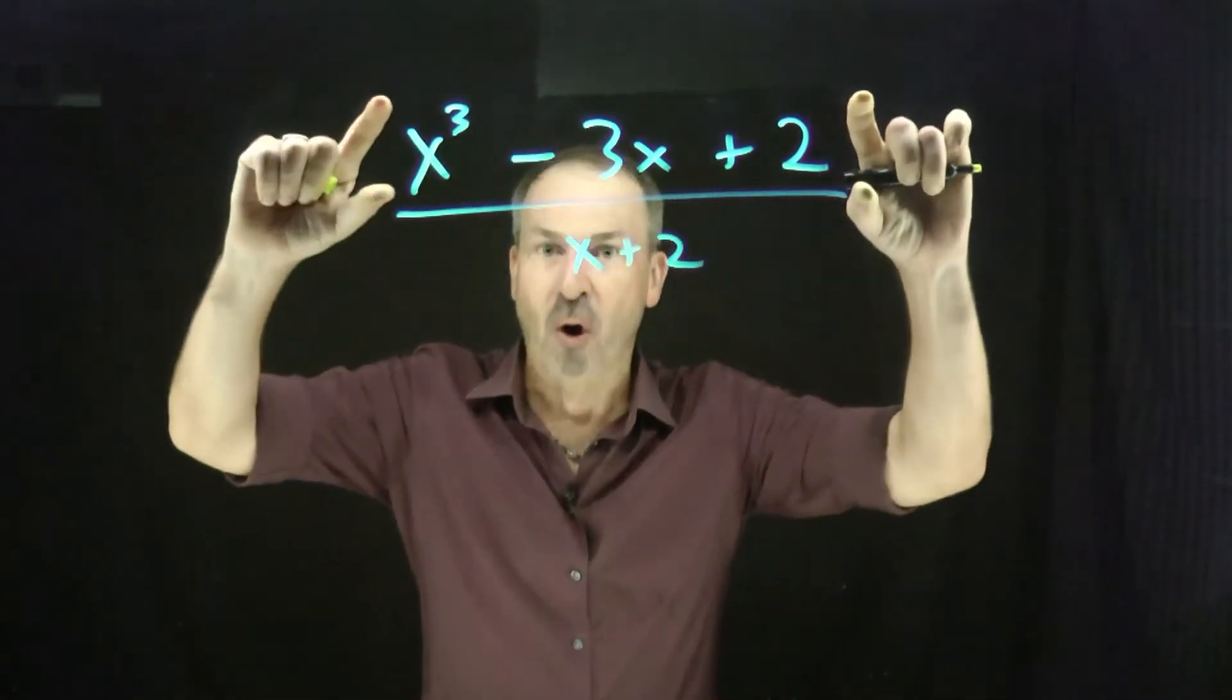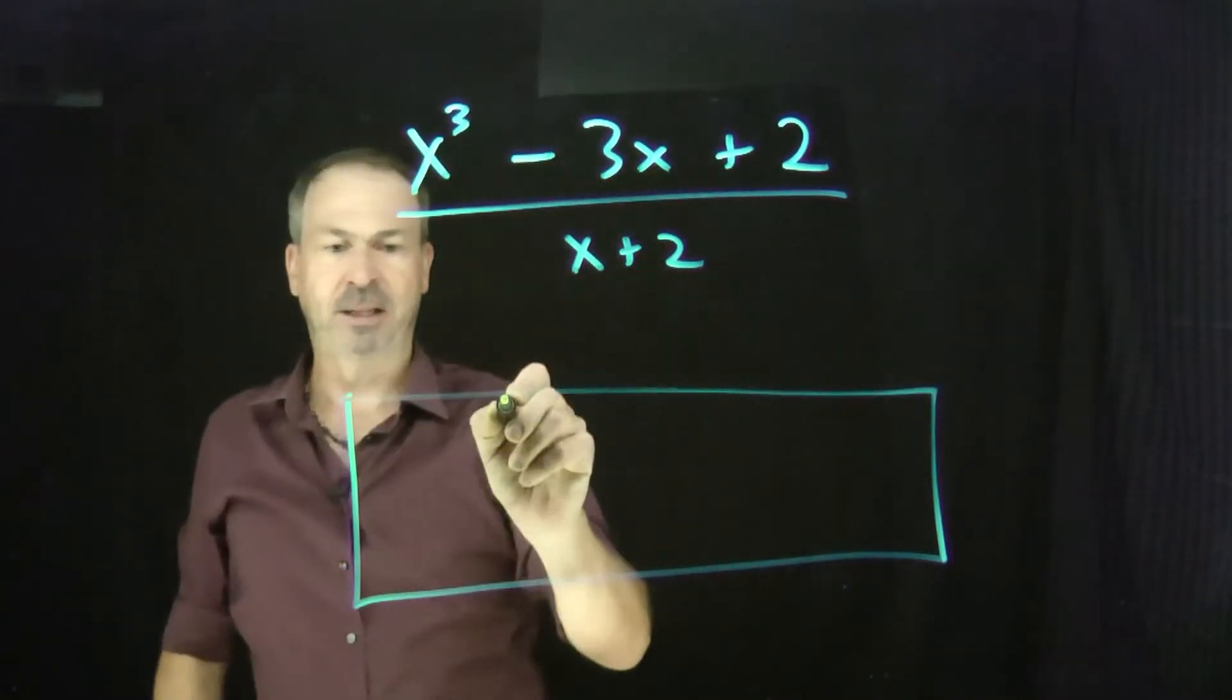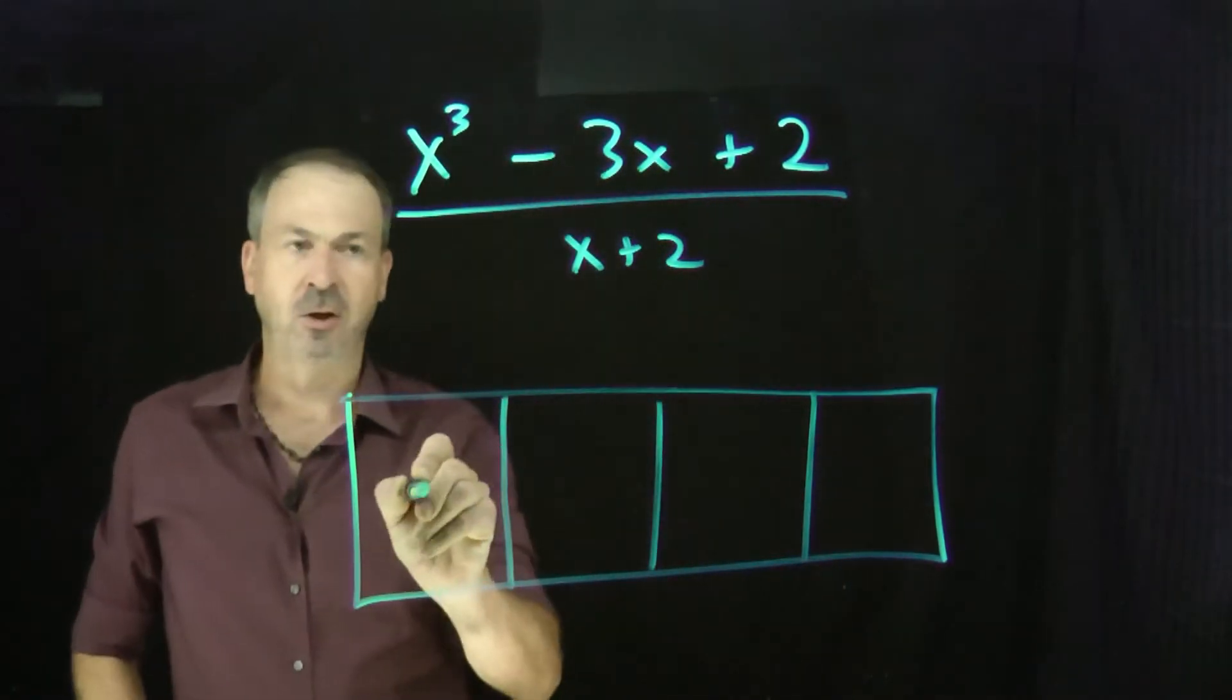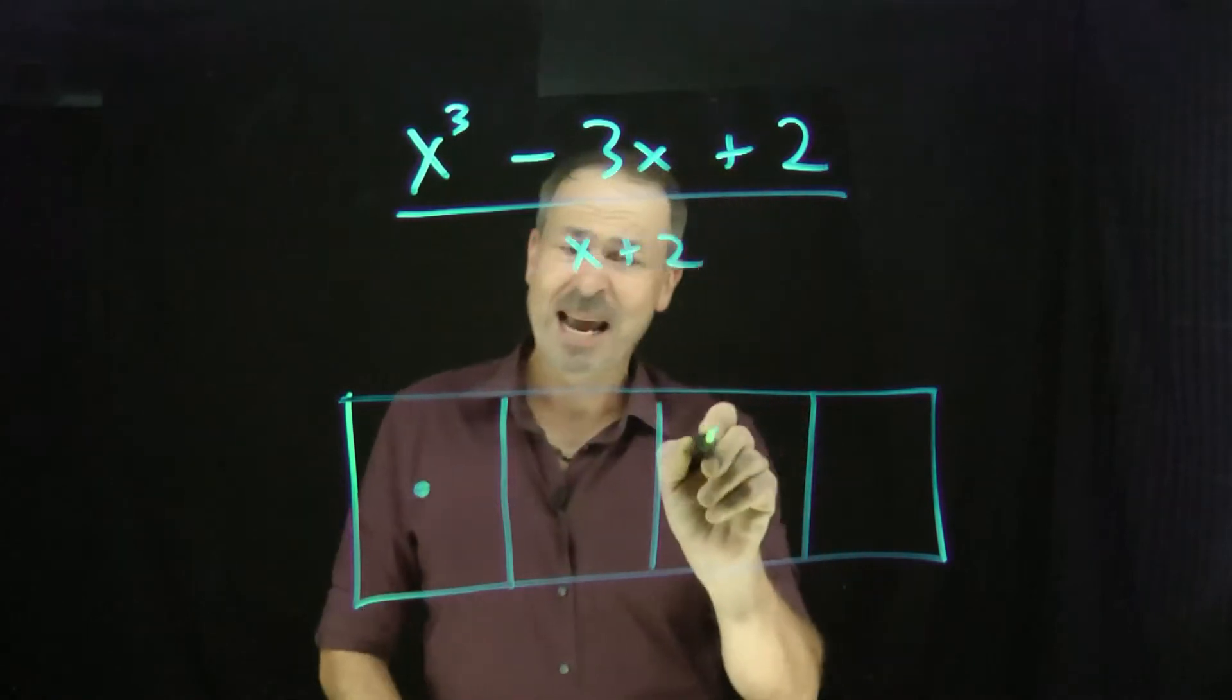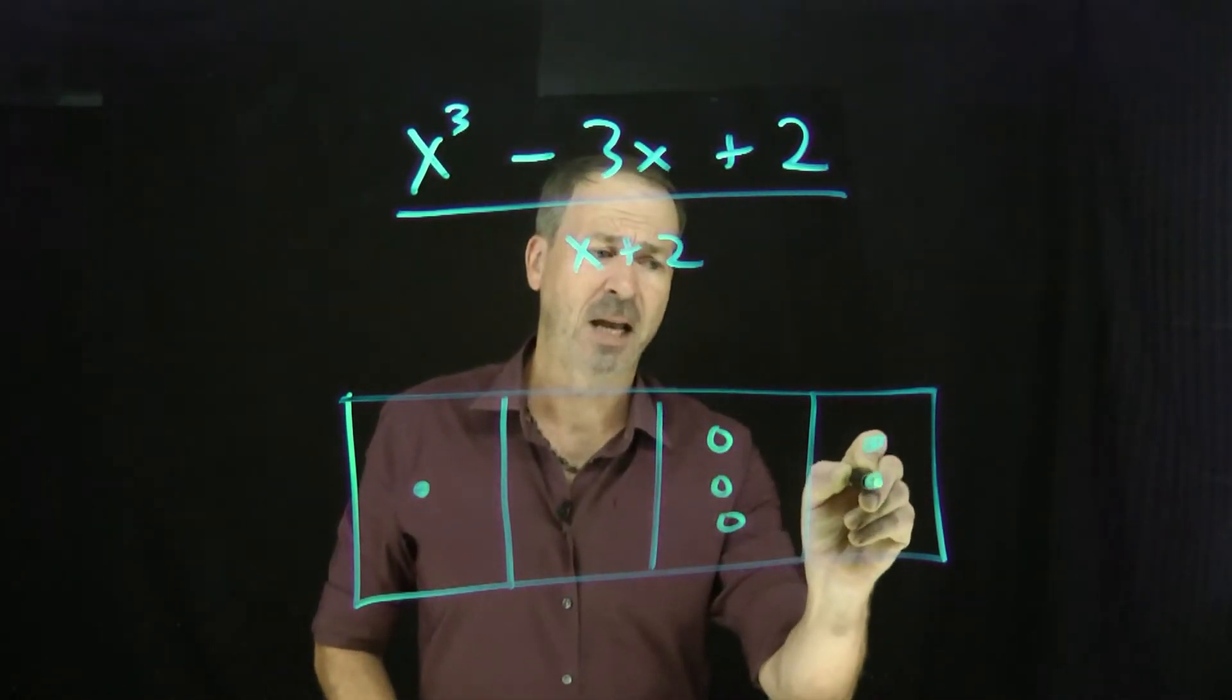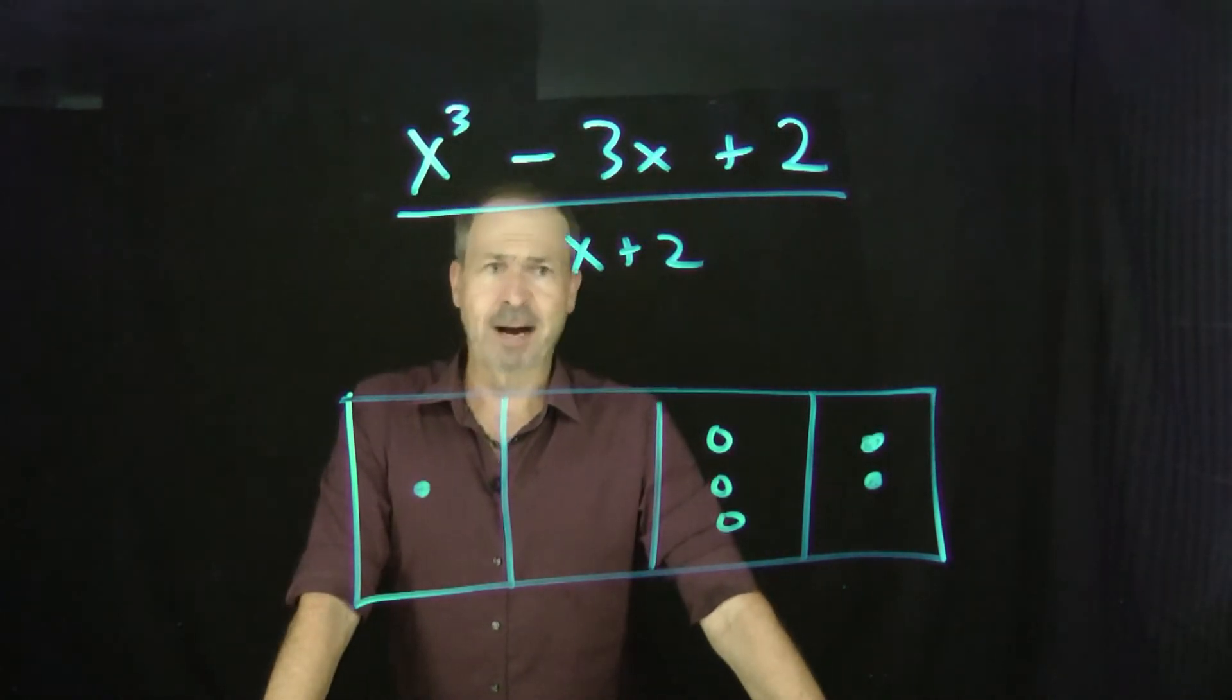First of all, can we at least draw what our answer is meant to be? Can we at least draw x cubed minus 3x plus 2? So x cubed, x squared, x's and 1's. 1x cubed. There are no x squareds up there. I guess I want 3 anti-x's. 3 anti-x's and 2. And 2. All right, so that's what we've got. That's our answer.